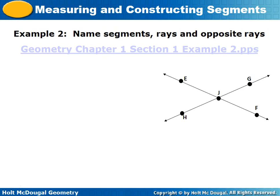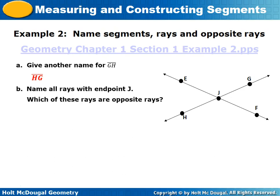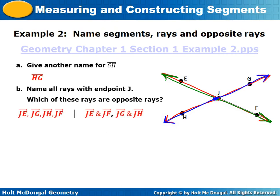Name the segments, rays, and opposite rays. Give another name for segment GH — since it's a segment we just flip the letters to HG. It has endpoints H and G. Name all rays with endpoint J: those would be JE, JG, and JF. For opposite rays: JE and JF are opposite rays, and JH and JG are opposite rays.